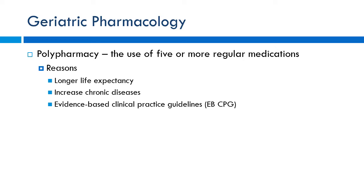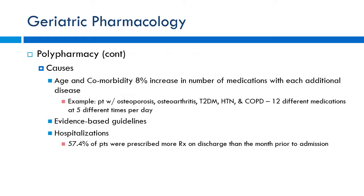Following guidelines is good evidence-based medical practice. For example, a patient with CHF and a previous MI could be on an ACE inhibitor, a statin, a beta-blocker, and a diuretic — and that's just for two disease states. As patients get older, more comorbidities develop, and each additional disease can increase the number of drugs by about 8%. Someone with osteoporosis, osteoarthritis, type 2 diabetes, hypertension, and COPD may be on 12 different medications taken five times a day.